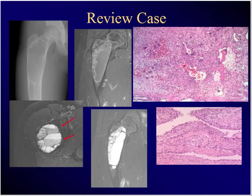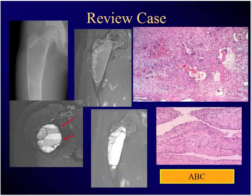Proximal femoral lesion with this plain film and this MR. Notice these features with this histopath. What's the diagnosis? ABC — aneurysmal bone cyst.